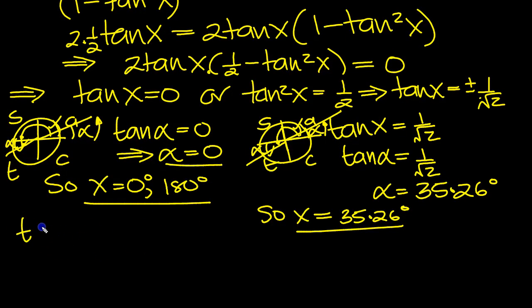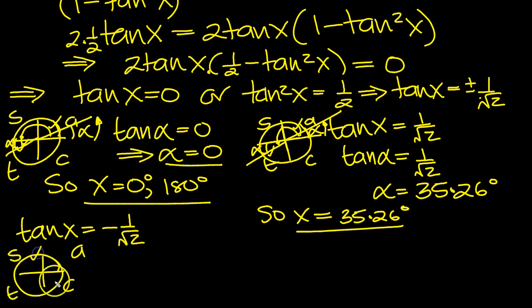Now let's just do the last one then, tan x is equal to minus 1 over root 2. Let's draw a circle. CAST, tan is negative. Tan is positive here and here, so it's negative there and there. Since we're only doing 0 to 180, we're only actually interested in this segment here.